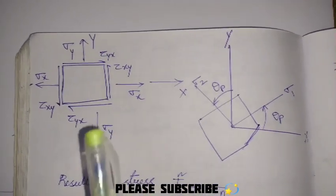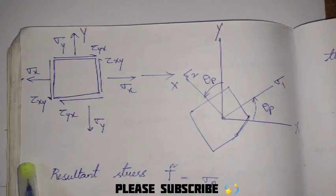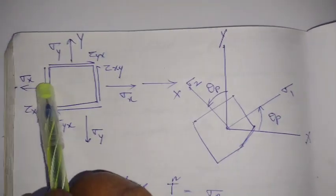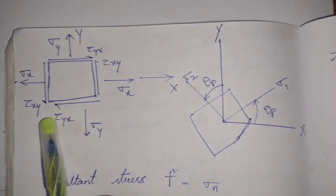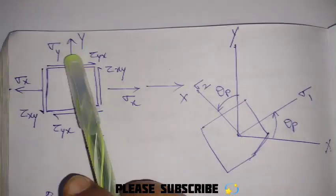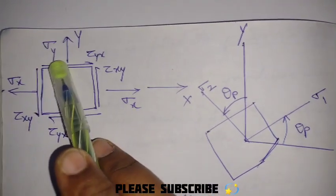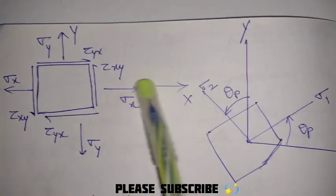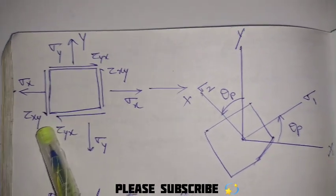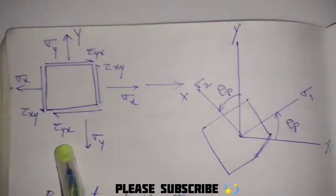Coming to the derivation first - this is the rectangular element with the given stress components. We have to find the principal stresses and also check for invariance. This is the stress distribution: sigma x in the x direction, sigma y in the y direction, and tau yx and tau xy are the shear stresses developed due to these normal stresses. Tau xy is the component of stress in the y direction.